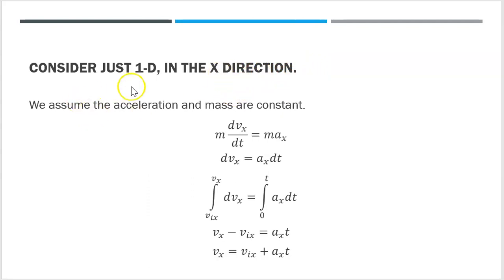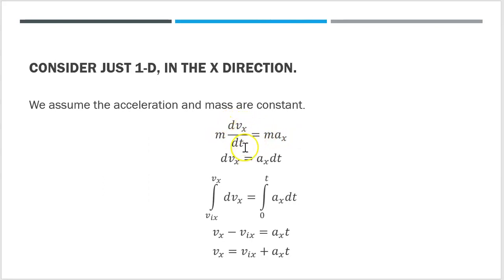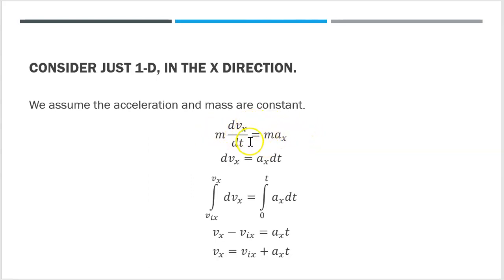We're assuming the acceleration and the mass are constant. The definition of acceleration is the time rate of change of velocity. So if I write m times ax — mass times acceleration in the x direction — I can also rewrite that as m times dvx/dt, the time rate of change of velocity. Since the mass is constant and appears on both sides of the equation, I can cancel it out, leaving dvx/dt equals the acceleration — which is just the definition of acceleration.